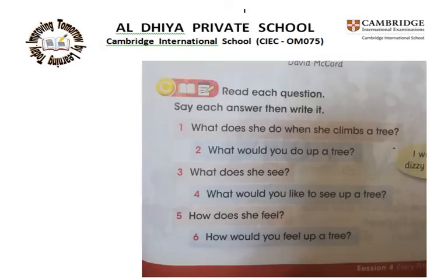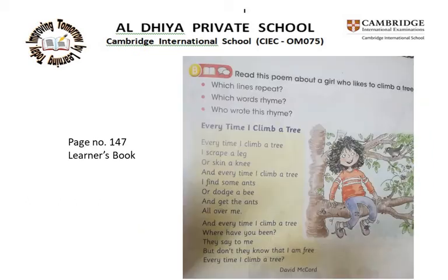Then what would you do up a tree? They are asking you — what would you do if you climbed up a tree? Think about it. Now the third question: what does she see? Let's look at the poem again. In the picture we see there are some bees, ants, and a bird. The poem says: every time I climb a tree, I find some ants or dodge a bee. So she sees ants, bees, and a bird.